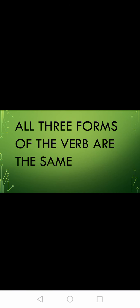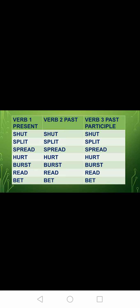Now students, we are going to see the verbs where all three forms are the same — V1, V2, V3 are the same; we are not going to change them. Let's see the examples. Shut — past tense is also shut and past participle is also shut. You are not going to write 'shutted' or 'shutting' in the past tense. Not 'shutted', not 'shuttered' — it's shut, shut, shut.